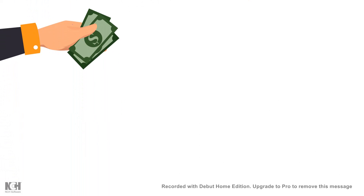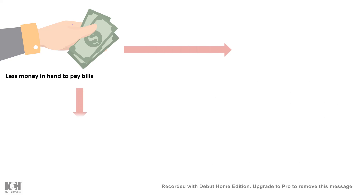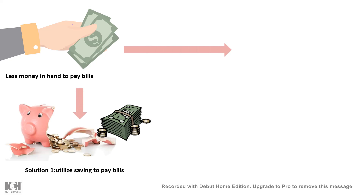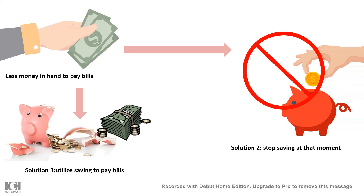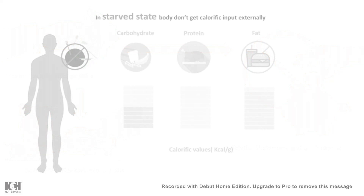Imagine you don't have any cash in your hand but you need to pay your bills. In that situation, you can utilize your savings to pay your bills, and you should stop saving at the moment when you don't have any money — you should focus on spending rather than saving. The situation for our body is the same. In a starved state, when we don't have caloric input, our body should focus on more catabolic processes than anabolic processes.